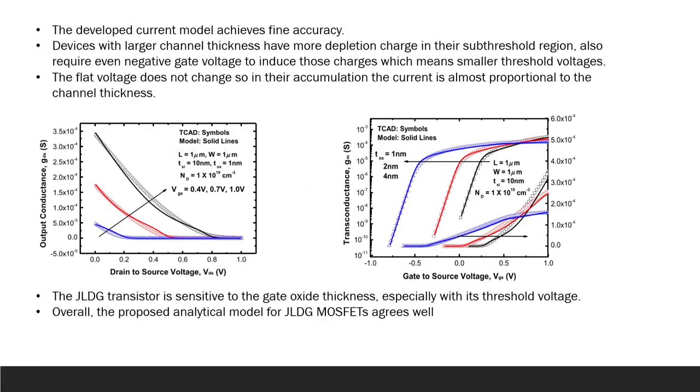Drain current model validation: this figure shows model predicted transfer characteristic of a symmetric JLDG MOSFET at two different drain-to-source voltages together with numerical simulation results. Good agreement is observed from fully depletion to partially depletion regions. Comparison of the output characteristic from the proposed model and numerical simulation at different gate voltages is shown. With two doping concentrations, it shows good agreements not only in linear region but also the saturation region.